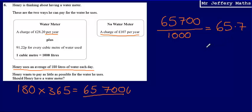So he uses 65.7 cubic meters per year, and he has to pay 91.22p for the cubic meters that he uses.